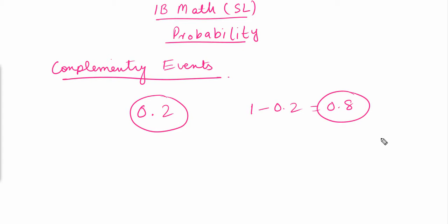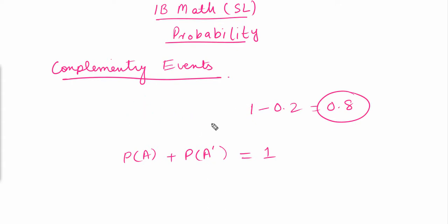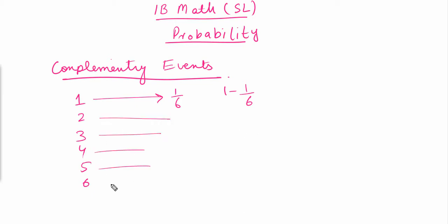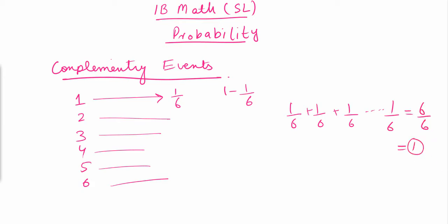In formula form, the probability of event A plus the probability that event A will not happen — written as A' (A dash) — equals 1. For example, rolling a dice with six numbers: the probability that 1 will come is 1/6, and the probability that 1 will not come equals 1 minus 1/6. The sum of all probabilities for all six numbers is 1/6 + 1/6 + ... (six times) = 6/6 = 1.